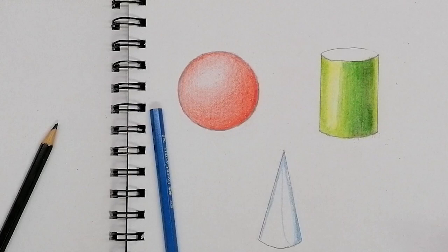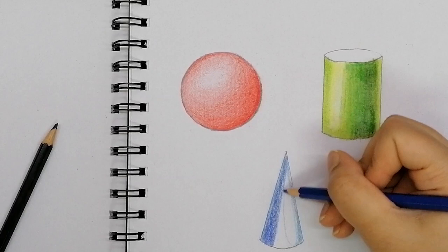I'm going to try the same thing with the cone over here, keeping in mind the highlighted area and then just blending with light and dark color pencil.